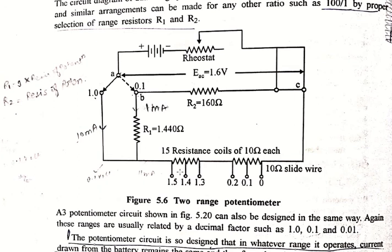In order to reduce the potentiometer range to one-tenth, that is equal to 0.16V, the current in 10 ohm resistor must be reduced to 1.0 mA.